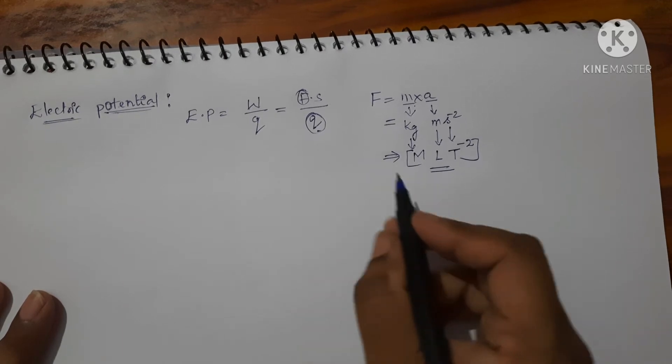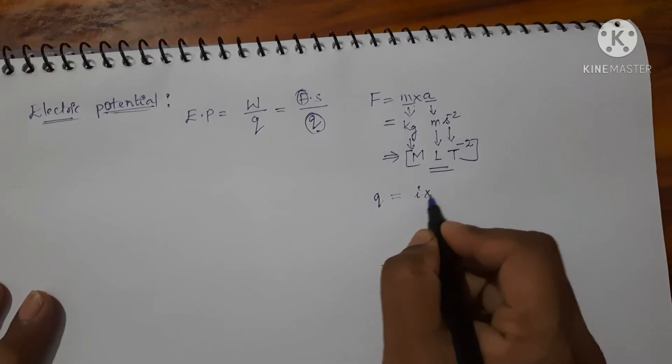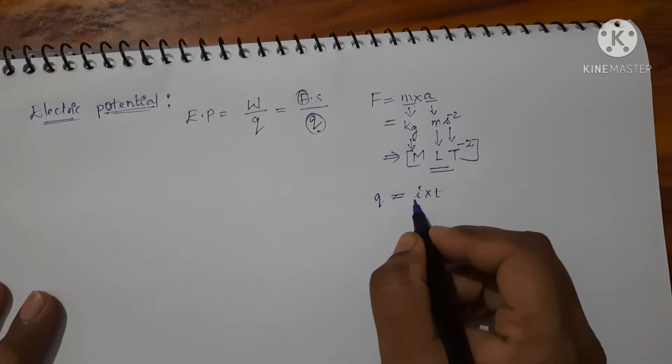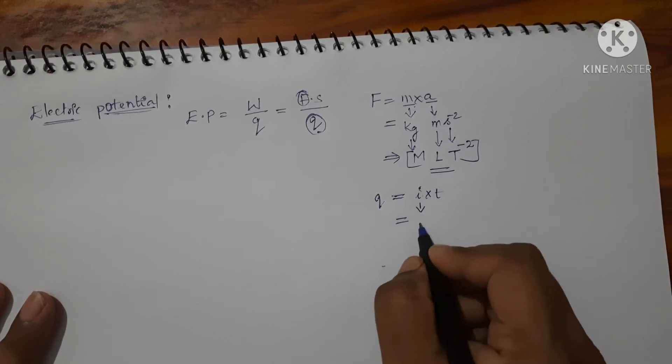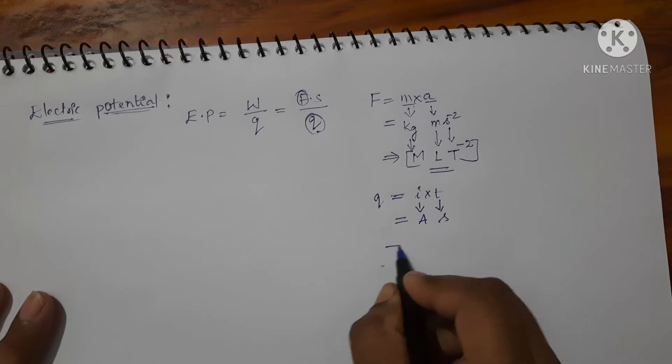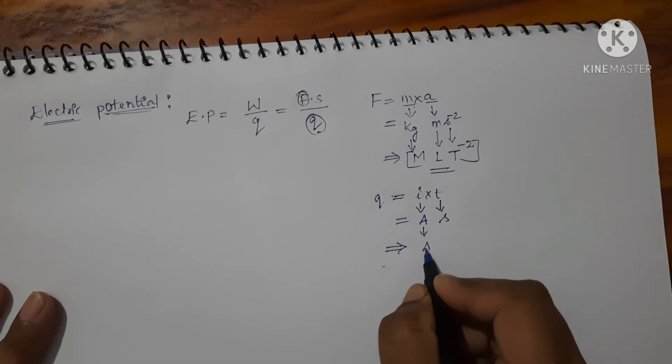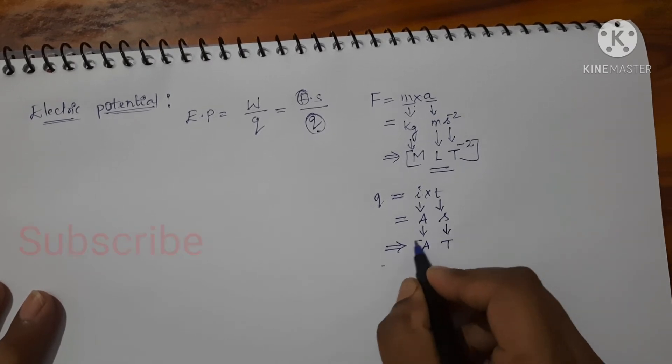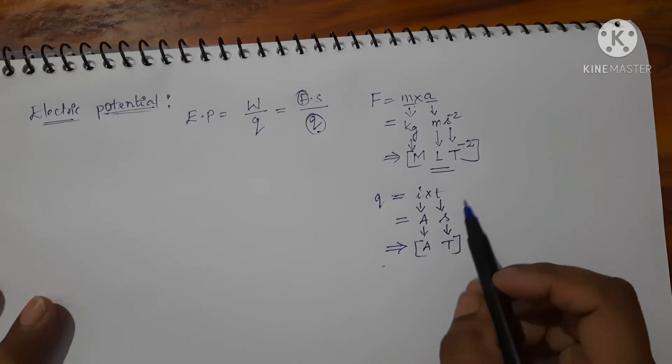Let us find for charge. Q is equal to I into T is the formula. Write the SI unit: I is ampere and time is second. Now write the dimensional formula. Ampere is expressed in dimensions capital A and second is expressed in terms of capital T. This is the dimensional formula for charge.